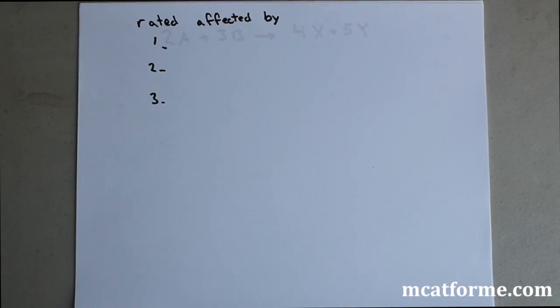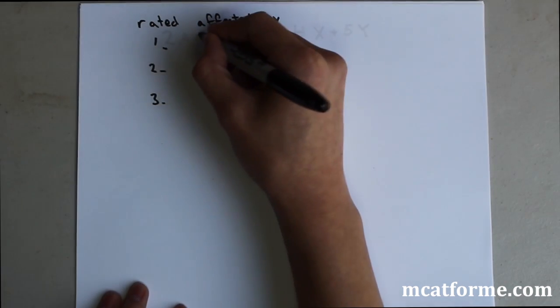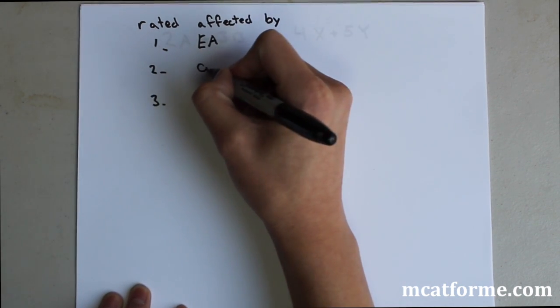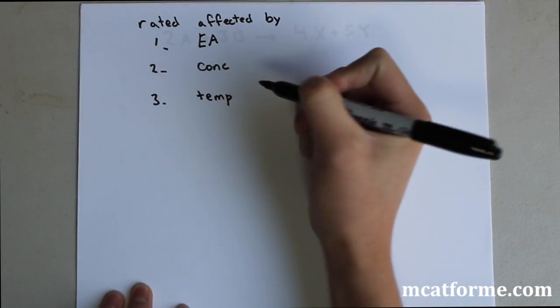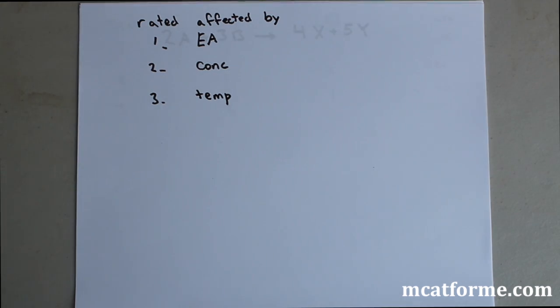Now we're going to be looking at what is the rate affected by. There's only three things that the rate can be affected by: activation energy, concentration, and temperature. An increase in activation energy will slow the reaction down, and a decrease in activation energy will make the rate faster. Increase the concentration, well that will also increase the rate, and increasing the temperature will increase the rate. Generally increasing is faster, and the only one that changes is activation energy—a decrease will make it faster.